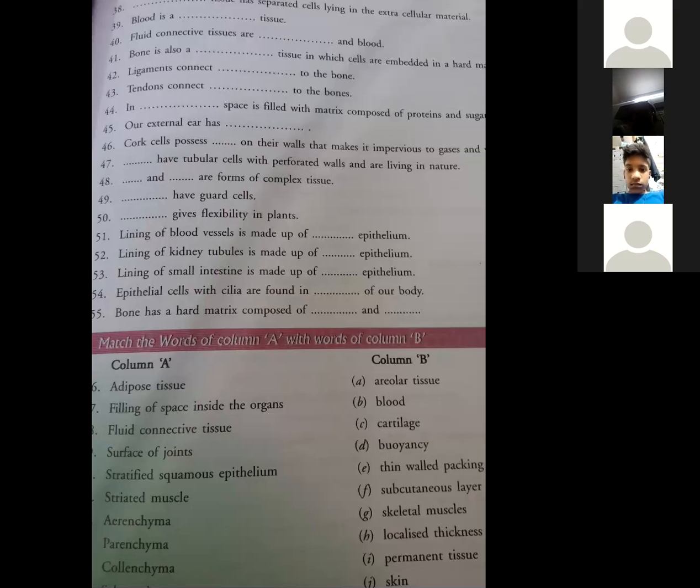After this, sclerenchyma. Sclerenchyma means permanent tissue. Sclerenchyma provides, you know? So we have completed this - sclerenchyma. That will come to permanent tissue, the last second one.